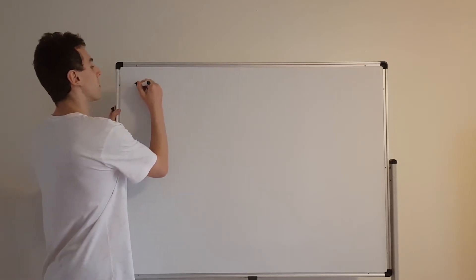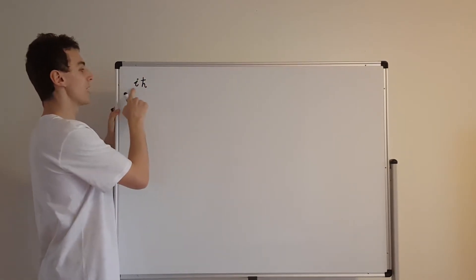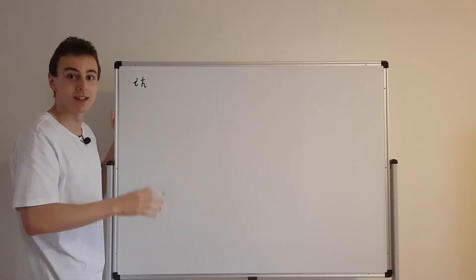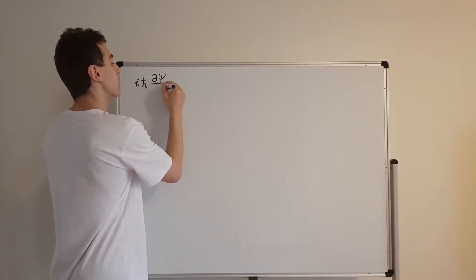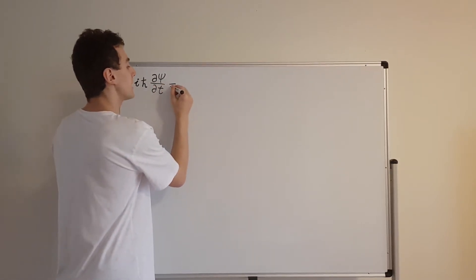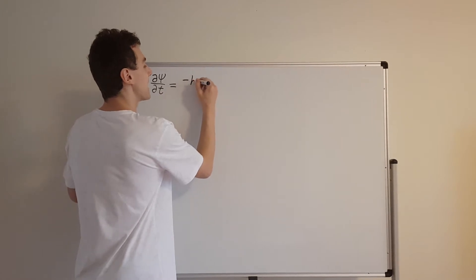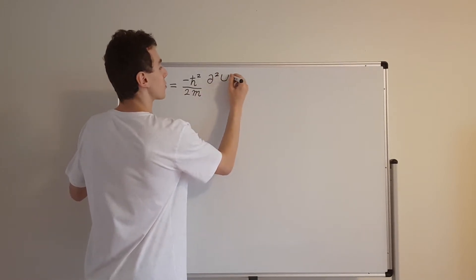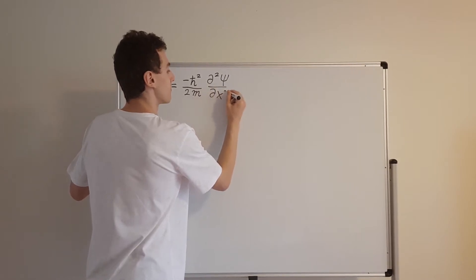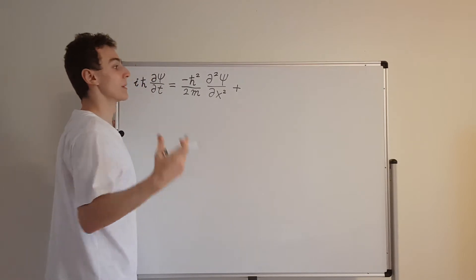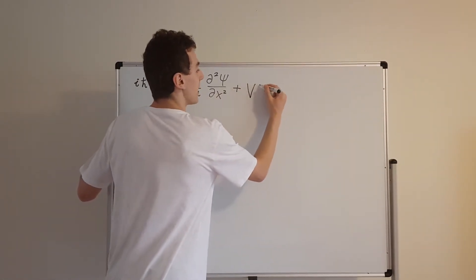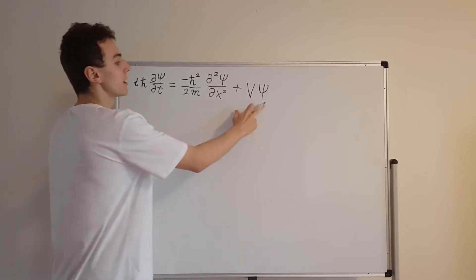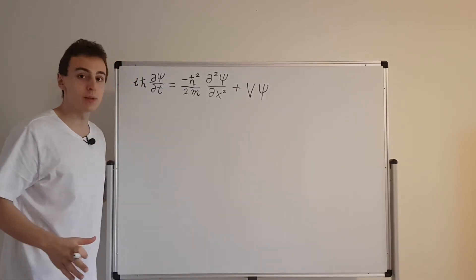The Schrodinger equation goes like this. We've got i h-bar — i is the imaginary unit and h-bar is a constant, the same as h over 2π, or Planck's constant divided by 2π. Then we've got the partial time derivative of the wave function on the left hand side. On the right hand side we have a term related to kinetic energy: minus h-bar squared over 2m times the second order partial derivative with respect to position. Finally we have a term related to potential energy involving the potential energy function V, which multiplies ψ — the wave function. The wave function depends on x and t, and V in general depends on x and t.